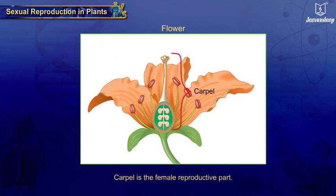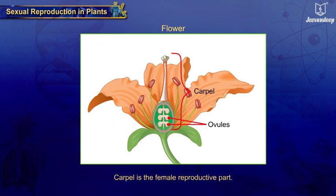The carpel, present in the center of the flower, is the female reproductive part. The carpel has a swollen base that contains one or more egg cells or ovules, an elongated part called the style, and a sticky terminal part.